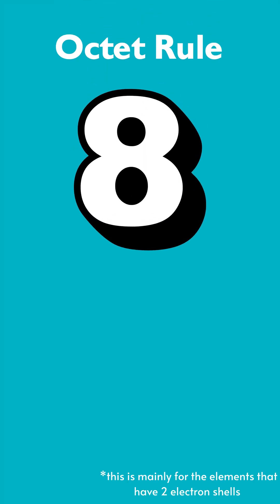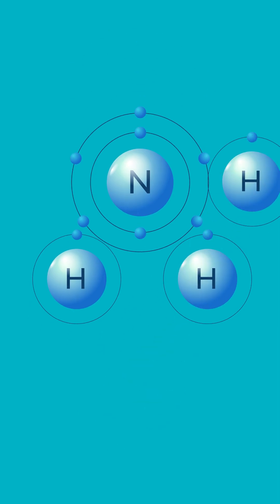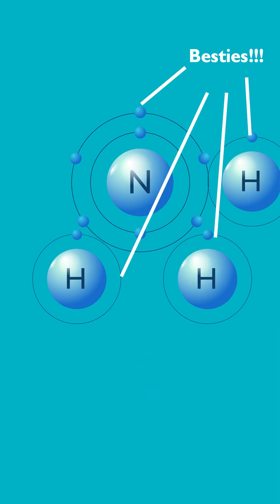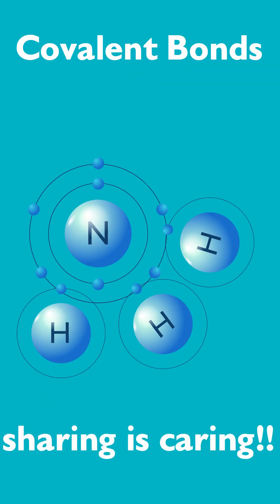So in order to get that full outer shell, they bond with other elements. This short will talk about covalent bonds, where atoms share electrons to become stable.